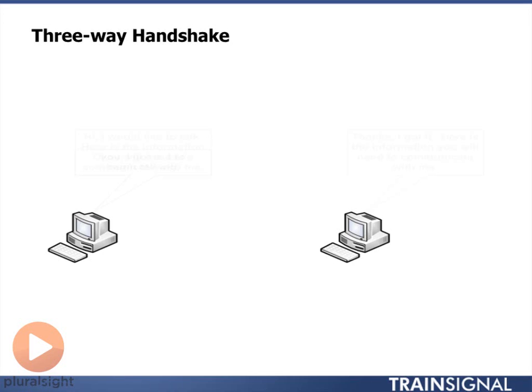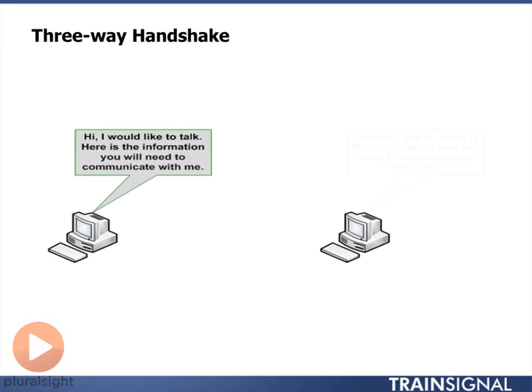The three-way handshake works like this. The computer that is going to initiate communications with another computer will start off by transmitting out and saying to that other computer: Hi, I would like to talk. I want to communicate with you. Here is the information that you need to know about me in order for us to have this communication.